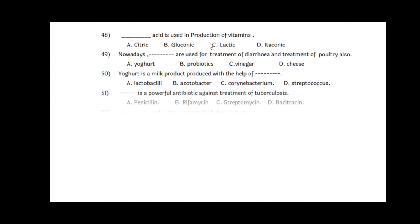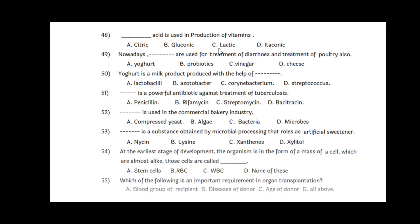Question 48: Dash acid is used in production of vitamins, and that is lactic acid, option C. While writing in the answer paper, you have to write only the letter or alphabet of the option. Question 49: Nowadays, dash are used for the treatment of diarrhea and treatment of poultry also, and that is probiotics, option B.